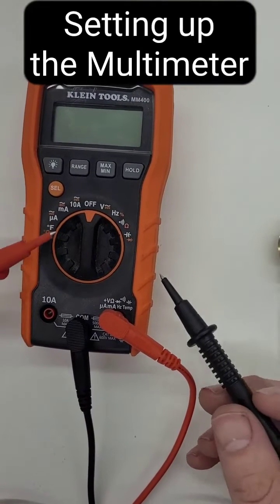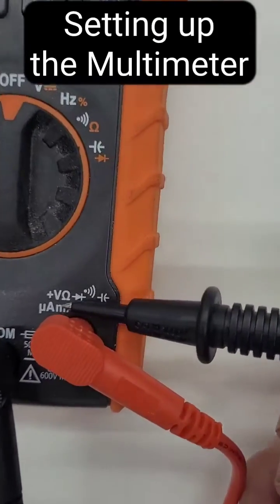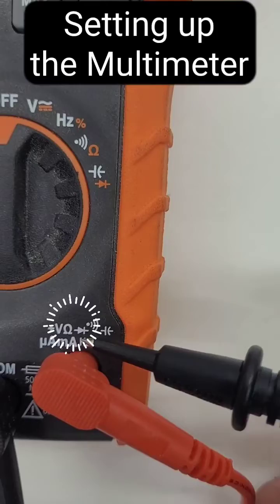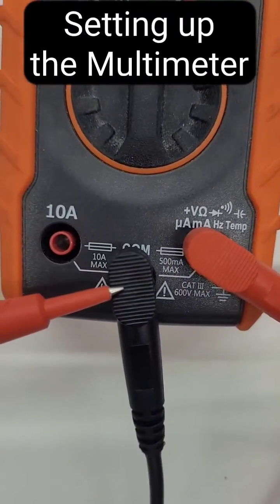Here's our multimeter, this is a pretty nice one. You want the red one in - see that volts, ohms? This is the resistance right there, that little upside down horseshoe. So you want the red one in there, and then you want the black one in the COM.